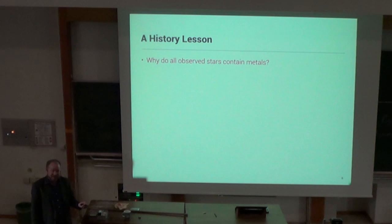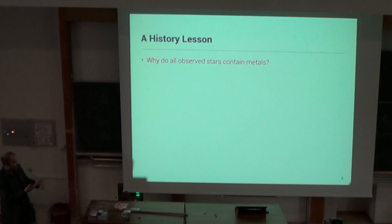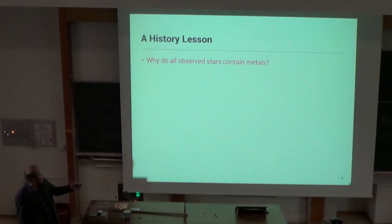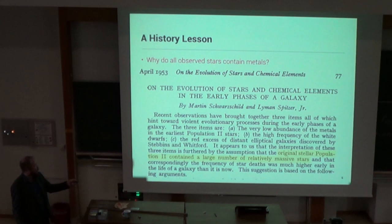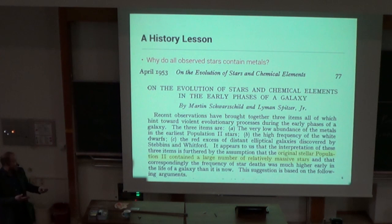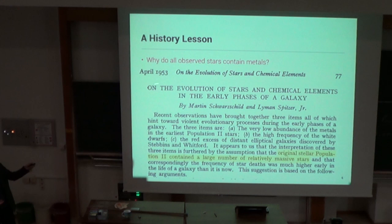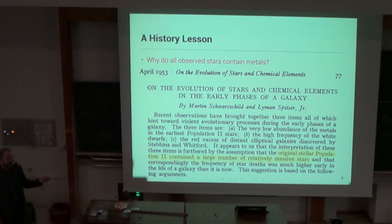To understand the first stars, I always like to step back and ask basic questions. We can look at all the stars in our Milky Way, the halo, the dwarf galaxies — and we see all the stars contain metals. But why do all the stars contain metals? The earliest reference I could find was Martin Schwarzschild and Spitzer. They saw a very low abundance of metals in two stars, a lot of white dwarfs, and red-and-dead galaxies, and interpreted this as meaning the original stellar population contained a large number of relatively massive stars — probably the first reference to massive stars in the early universe, over 63 years ago.